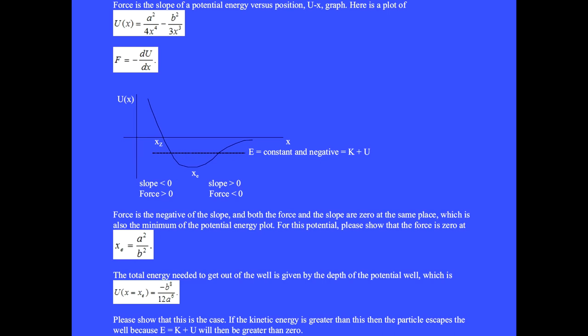The total energy needed to get out of the well is given by the depth of the potential well, which is U at x equals xe equals minus b to the eighth over 12a to the sixth. Please show that this is the case. If the kinetic energy is greater than this, then the particle escapes the well because E equals K plus U will then be greater than zero.